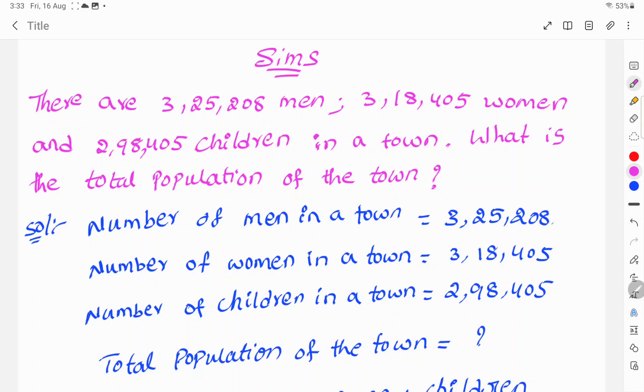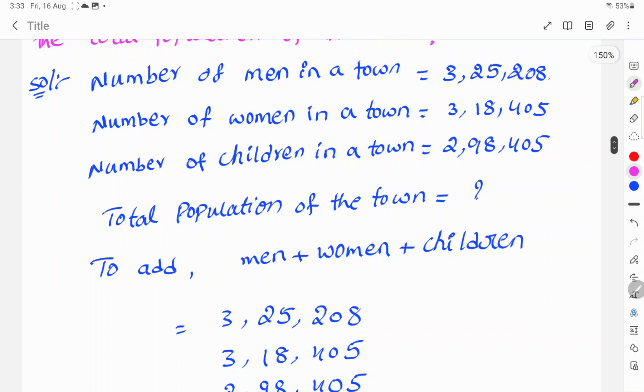To find the total population of the town, let's see. To add men plus women plus children values, then you will get easily the total population in the town.